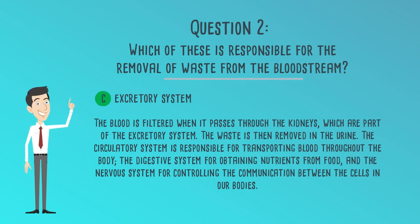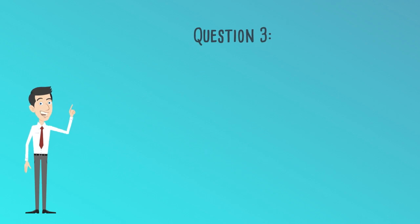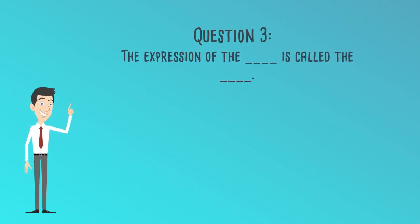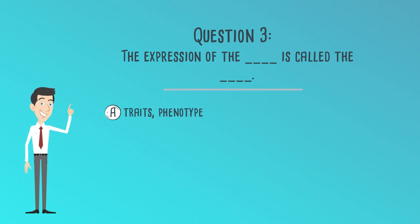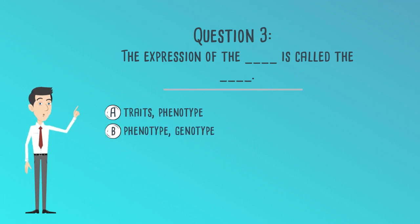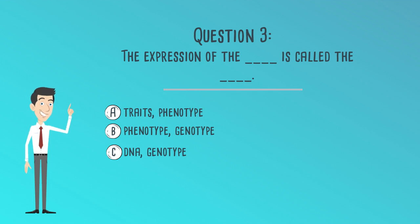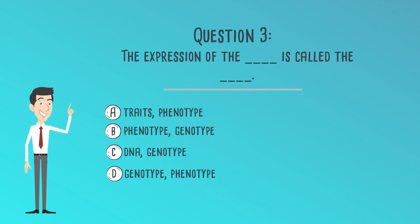Question 3. The expression of the blank is called the blank. A. Traits, phenotype. B. Phenotype, genotype. C. DNA, genotype. D. Genotype, phenotype.